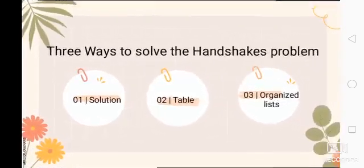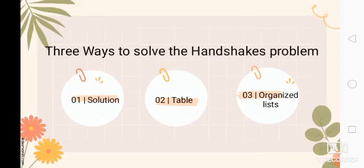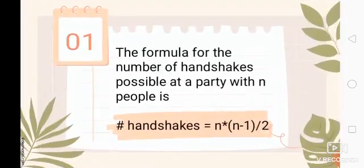We have here three ways to solve the handshakes problem. The first one, we can solve this through a formula-based solution. The second one is a table. The third is an organized list. Let's start with the solution. Here is the formula: the number of handshakes is equal to N times (N minus 1) divided by 2.